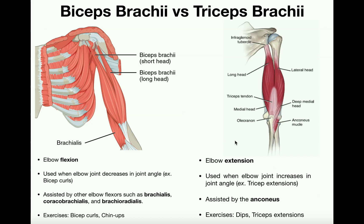In this video we're going to discuss the major motions of the elbow joint, which are really just two: elbow flexion and elbow extension. This is going to be another antagonistic pair of muscles that you're probably very familiar with — some of the more common ones to discuss — and those are the biceps brachii and the triceps brachii.